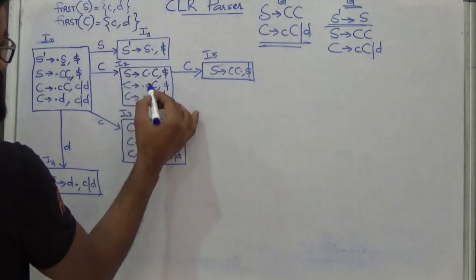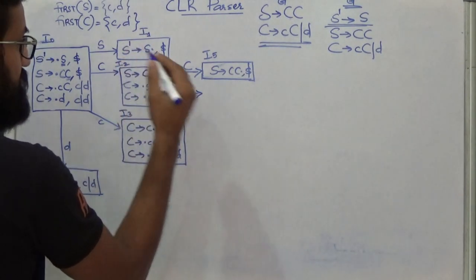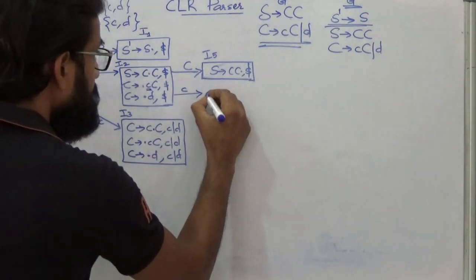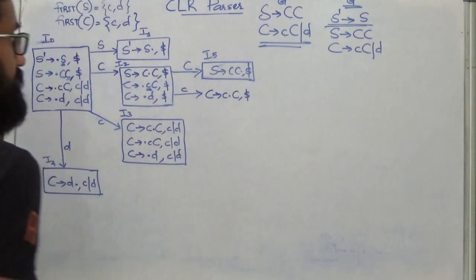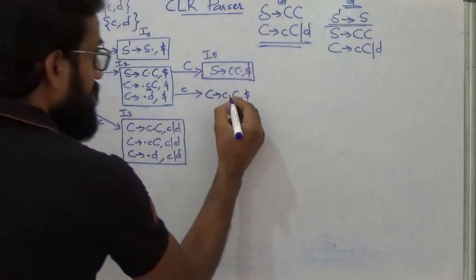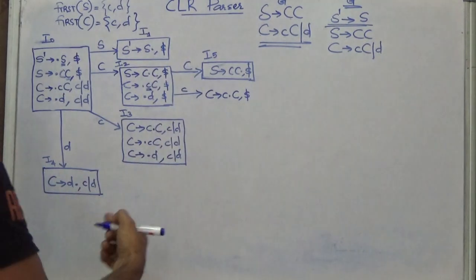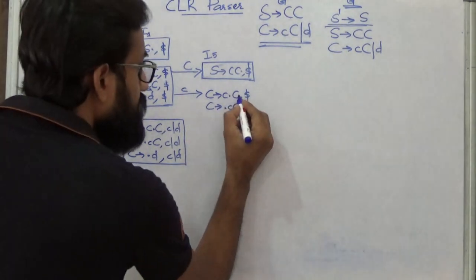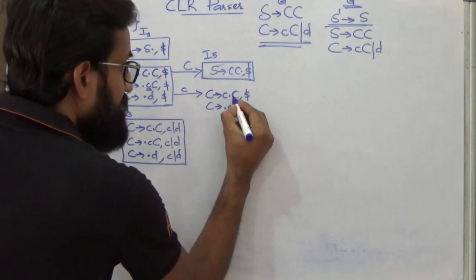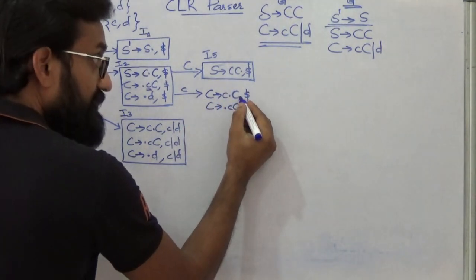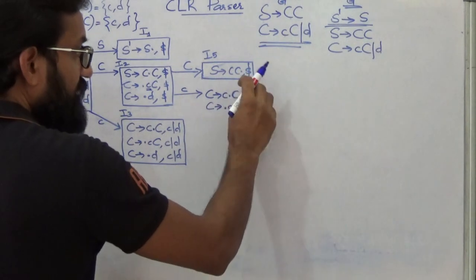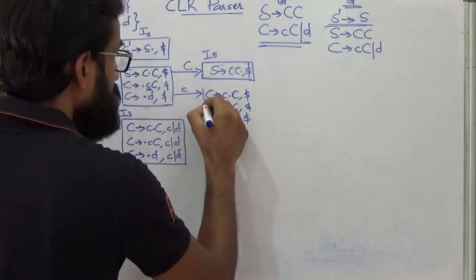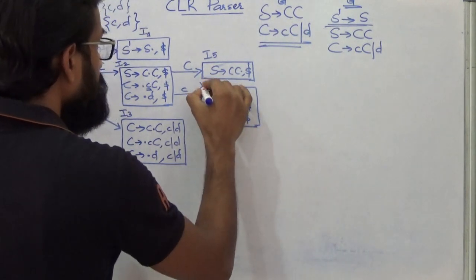From I3, applying terminal C transition leads back to item set I3 — a self-transition. Applying D transition from I3 goes to item set I4, giving C giving D dot with lookahead {c, d}. From I6, applying terminal C transition remains in I6 — a self-transition. Applying D transition from I6 goes to I7. States I4, I5, I7, I8, I9 have no further outgoing transitions.